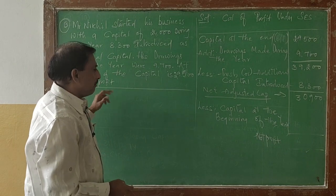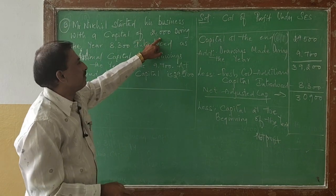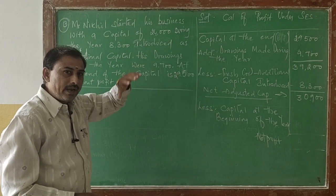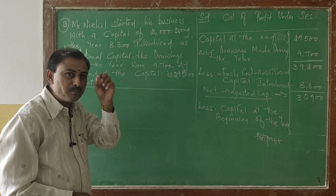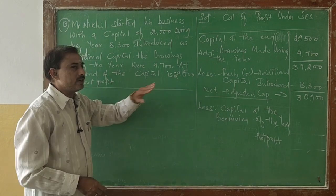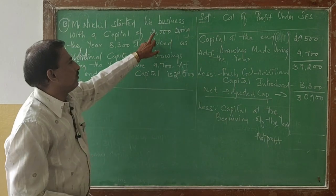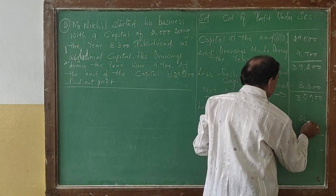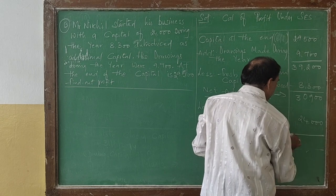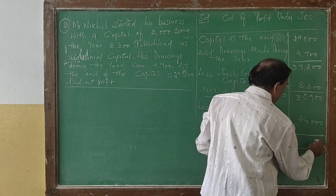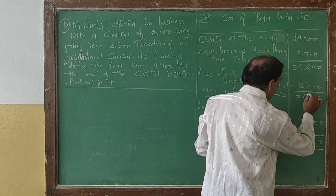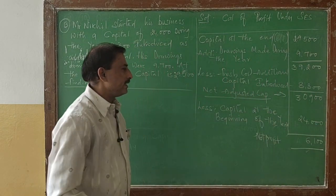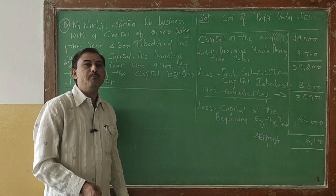Capital at the beginning of the year is 24,000 — this is the capital when he started the year. Capital at the end of his accounting period is 29,500. So net profit equals net adjusted capital minus capital at the beginning, which gives the profit for Mr. Nikhil's business.